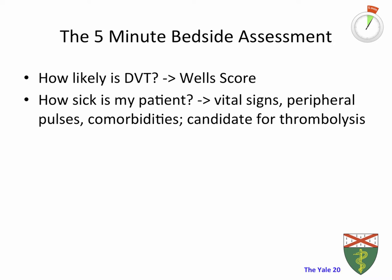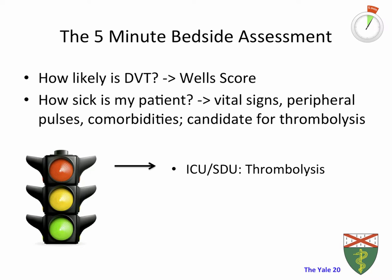The second question — not only for a patient with DVT — is how sick is my patient and what is the appropriate disposition plan. Key factors to assess are whether the patient is hemodynamically stable. You look at the vital signs, take comorbidities into account, and especially for DVT you want to check peripheral pulses, because if there are no peripheral pulses that could be a potentially life-threatening situation and this patient might be a candidate for thrombolysis. If you decide that your patient is a candidate for thrombolysis, that patient has to go for at least 24 hours to the ICU or at least to a step-down unit.